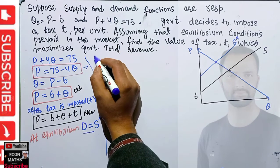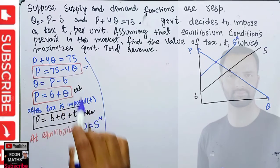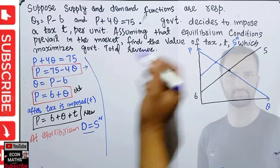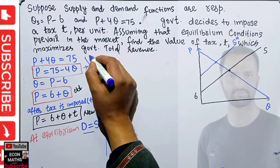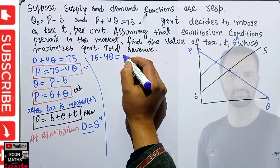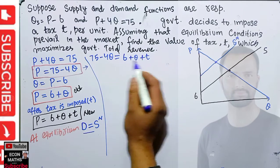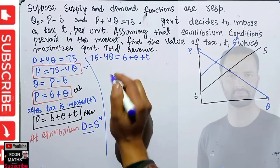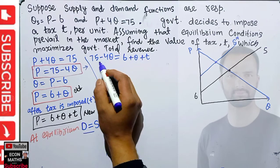Setting the functions equal: P = 75 - 4Q from demand and P = 6 + Q + T from the new supply. Since both left-hand sides are P, we equate the right-hand sides: 75 - 4Q = 6 + Q + T. Solving for Q, transposing terms: -4Q - Q gives us -5Q on the left.